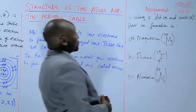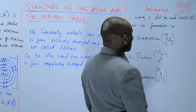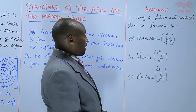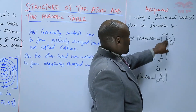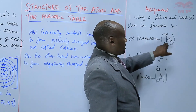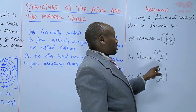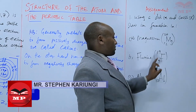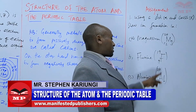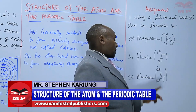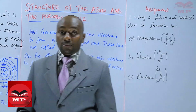For the assignment, using a dot and cross diagram, show ion formation in: magnesium (mass number 24, atomic number 12), fluorine (mass number 19, atomic number 9), and aluminium (mass number 27, atomic number 13). We'll stop there until next time. Goodbye.